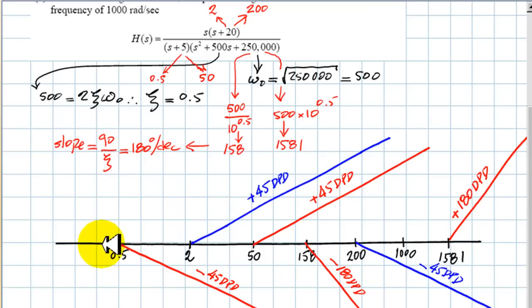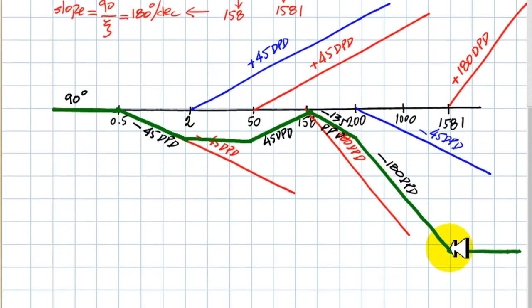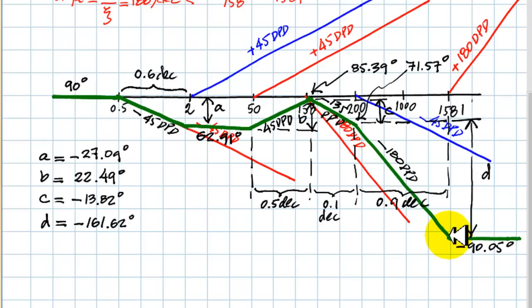The entry is going to be 90 degrees, because we have a simple zero at zero, horizontal at 90 degrees. The slopes are, entering with 90 degrees, minus 45 degrees per decade, horizontal, positive 45 degrees per decade, negative 135 degrees per decade, negative 180 degrees per decade, and horizontal after 1581 radians per second. Then we compute the decades. With the slope, we have the drops. In this case, A is negative 27 degrees, the value here is 90, the value at this knee 2 is 62.91 degrees. We do the same for all the others.